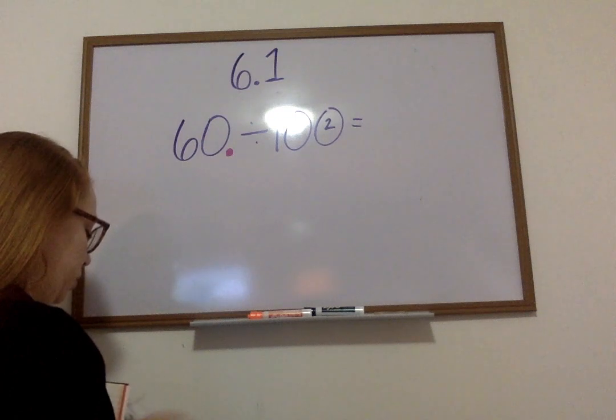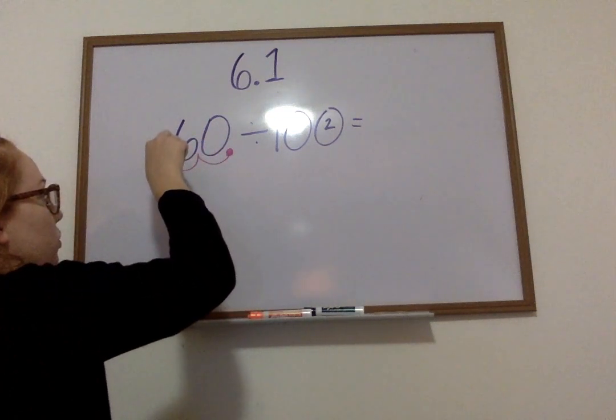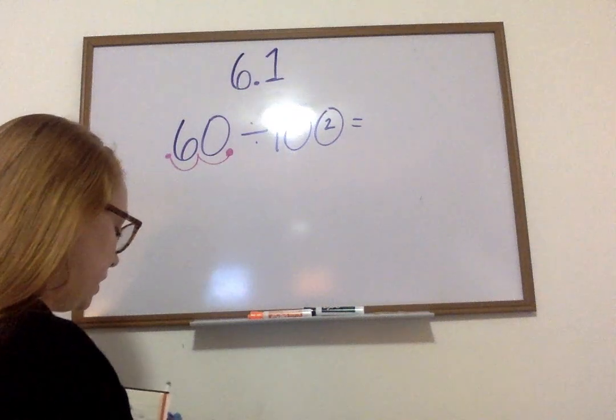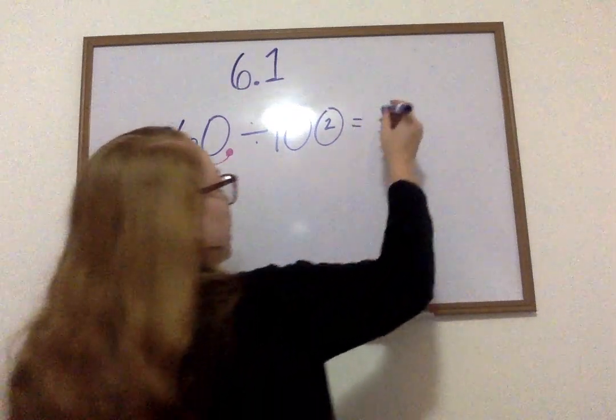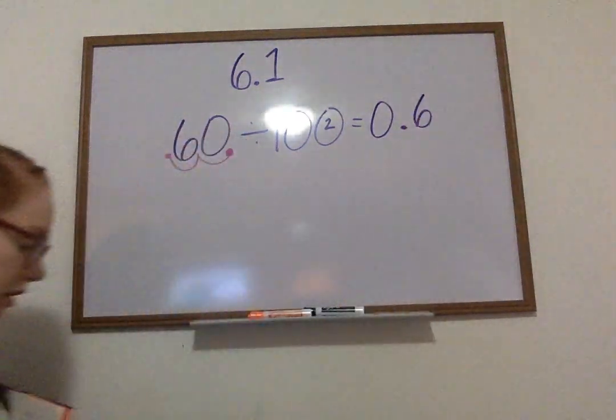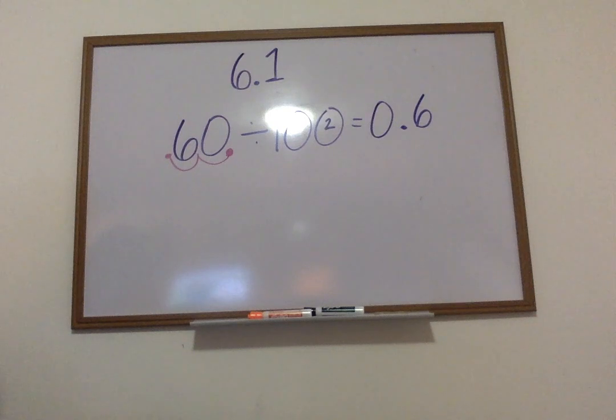It's going to move two places forward, one, two, and it's now going to be in front of the six. So, the answer ends up becoming 0.6 would be our final answer. Let's work on the next one.